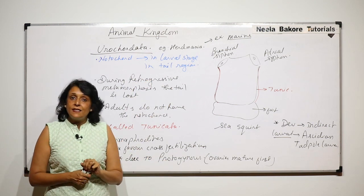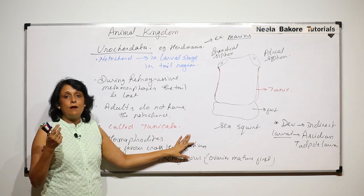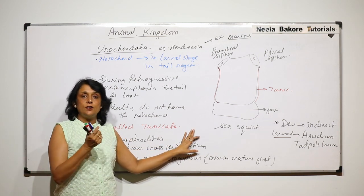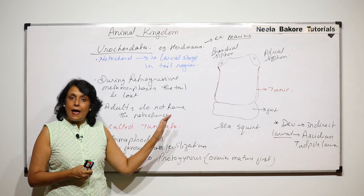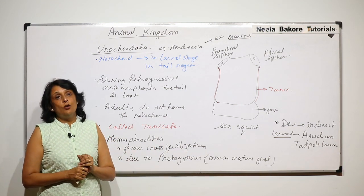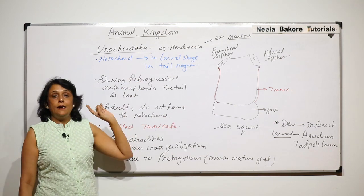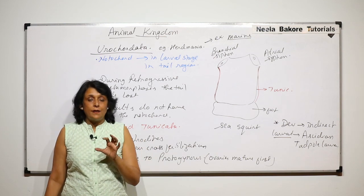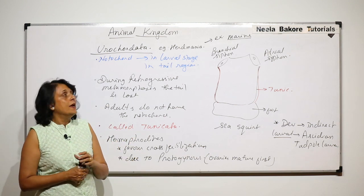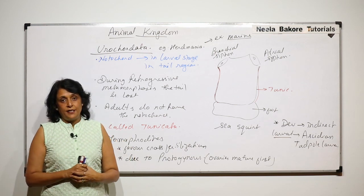When we take some other examples, we will realize that other chordate characters — like pharyngeal gill slits and tail — are present only in the embryonic stage, and as the animal undergoes metamorphosis, all those characters get lost. Urochordata and Cephalochordata together are known as Protochordates, as they are considered the primitive chordates. In the next part we will take another subphylum, that is Cephalochordata.